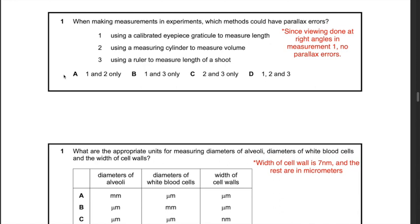Question 14: which methods could have parallax errors? Statement 1 — using a calibrated eyepiece graticule to measure length — is incorrect, because you are viewing at right angles through the lens and there are no different positions to place your eye. However, statements 2 and 3 involve different positions where the eye can be placed, so due to differences in eye judgment, they could lead to parallax errors. The answer is C — 2 and 3 only.